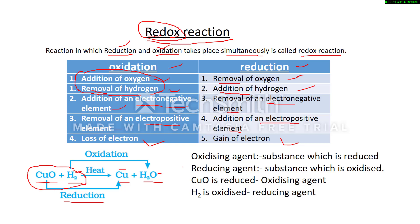Now, some more terms: the substance which is reduced is called the oxidizing agent, and the substance which is oxidized is called the reducing agent. In the CuO + H2 example, copper oxide is reduced to copper, so copper oxide is the oxidizing agent. Hydrogen is oxidized to water, so hydrogen is the reducing agent. These four terms — oxidation, reduction, oxidizing agent, and reducing agent — must be clear.